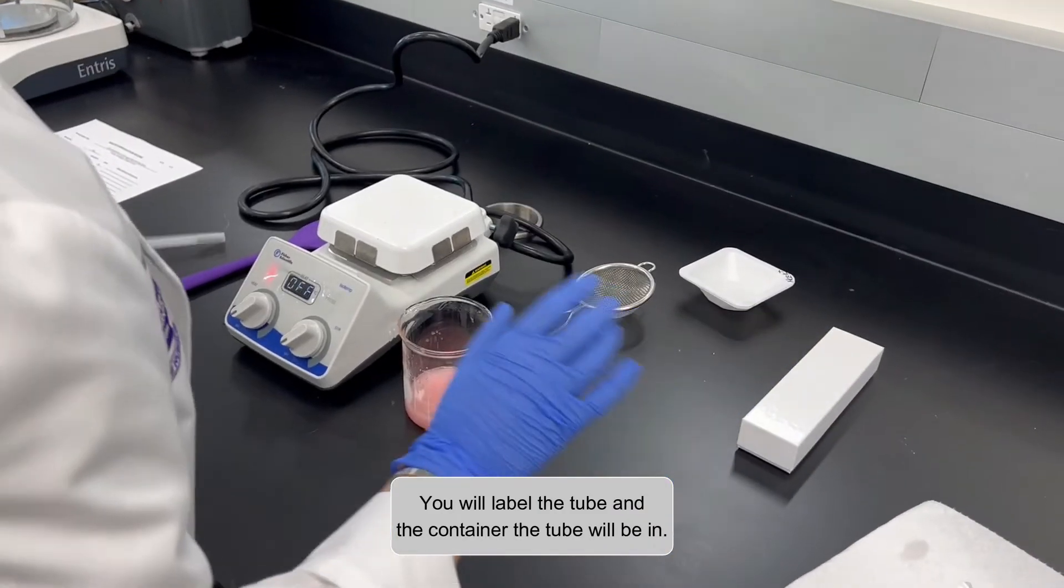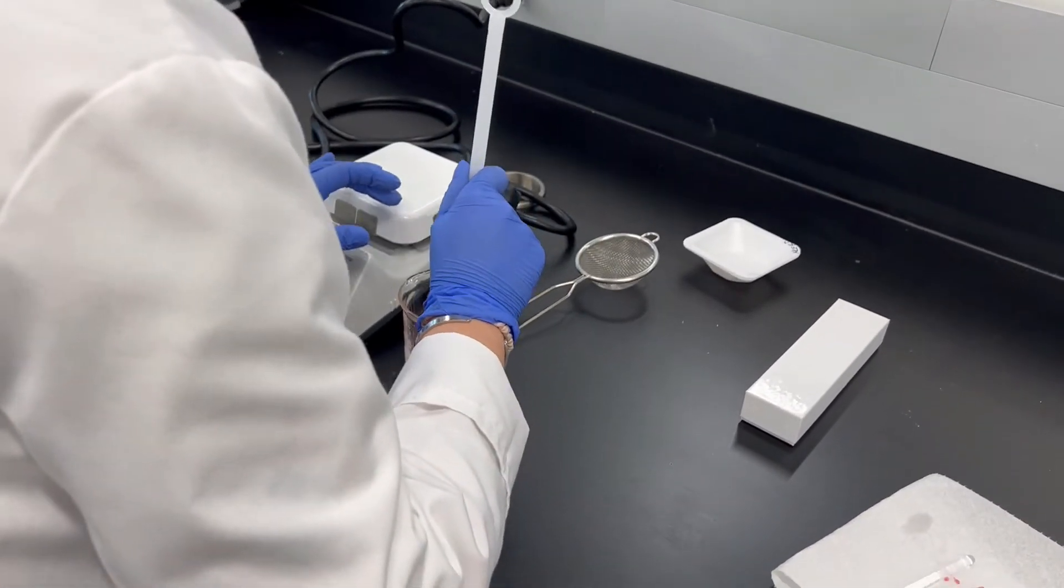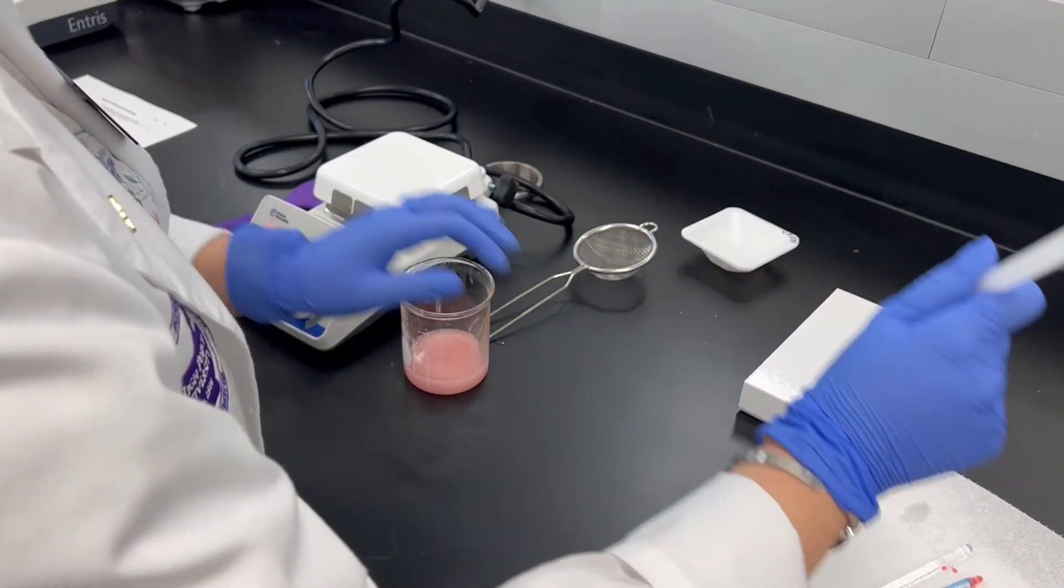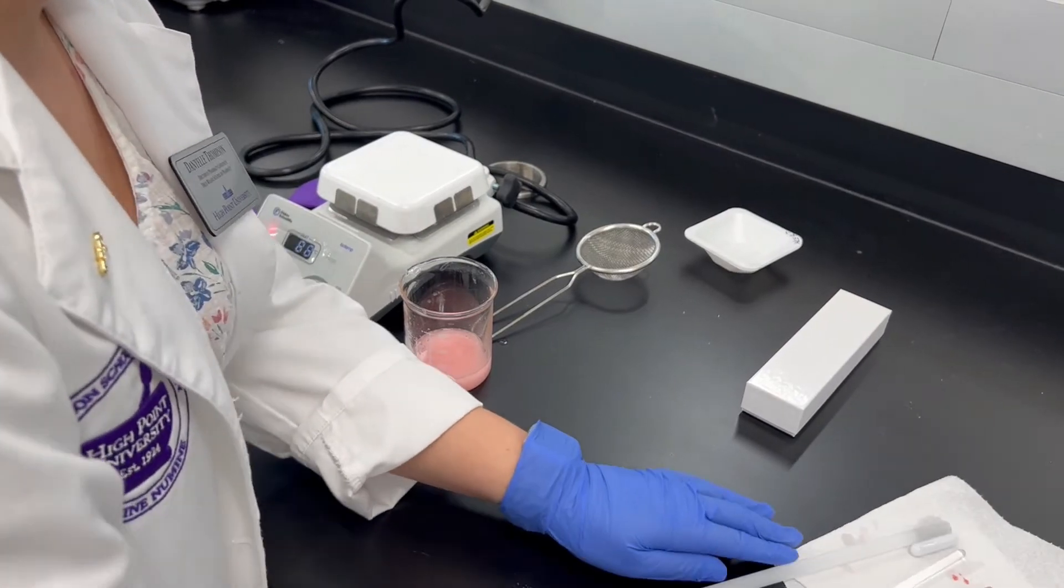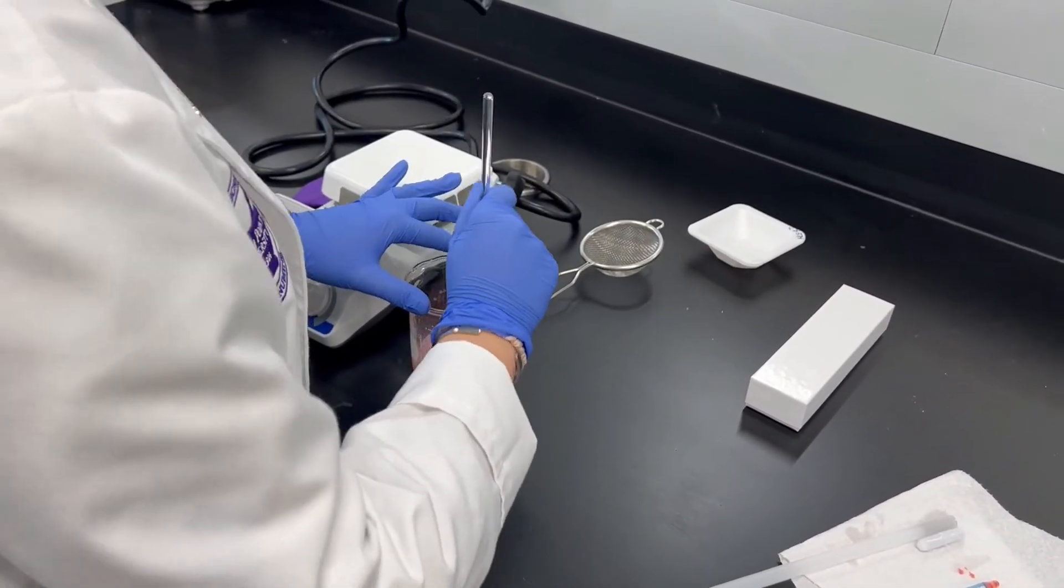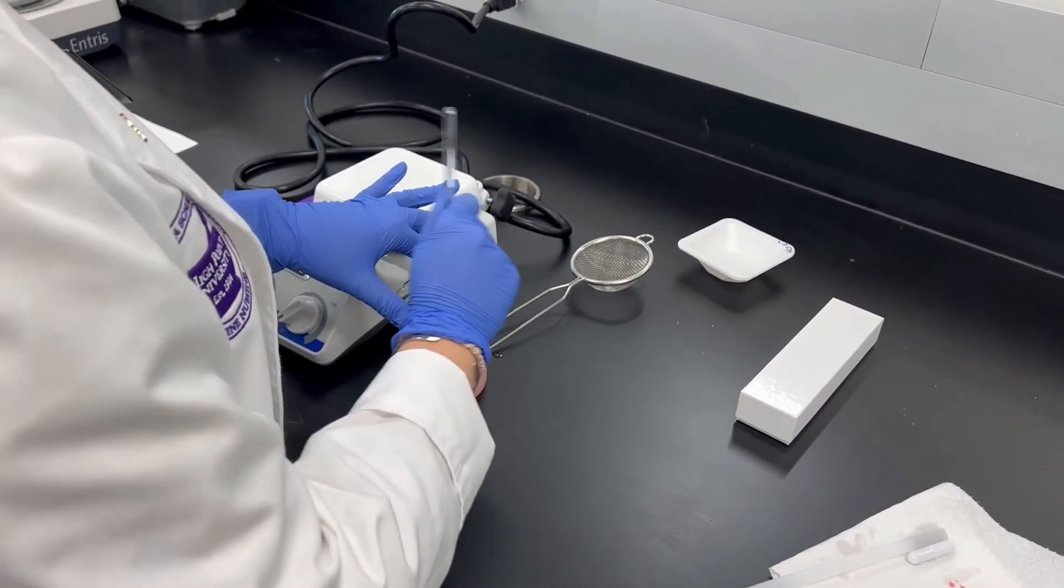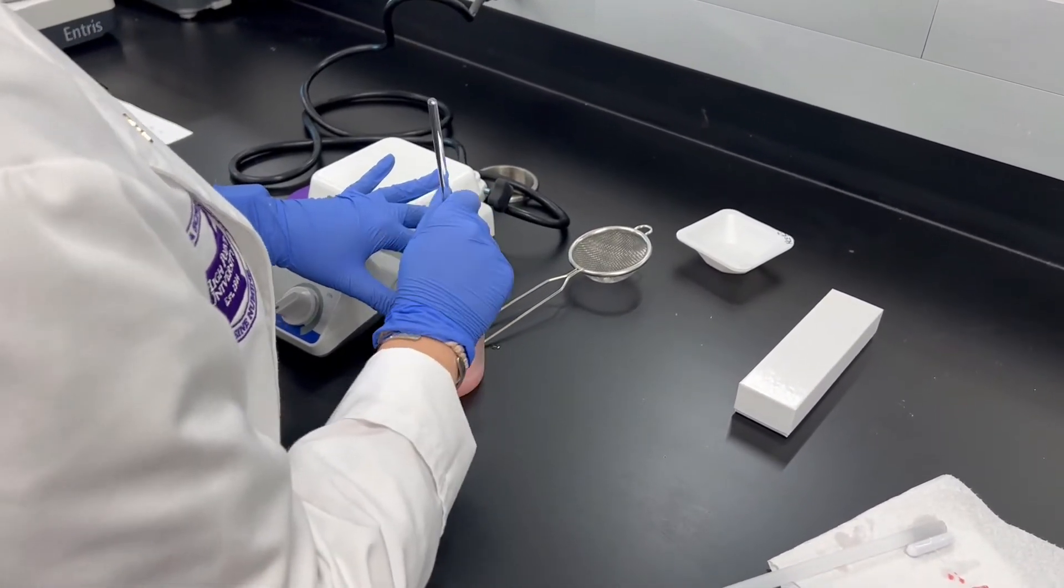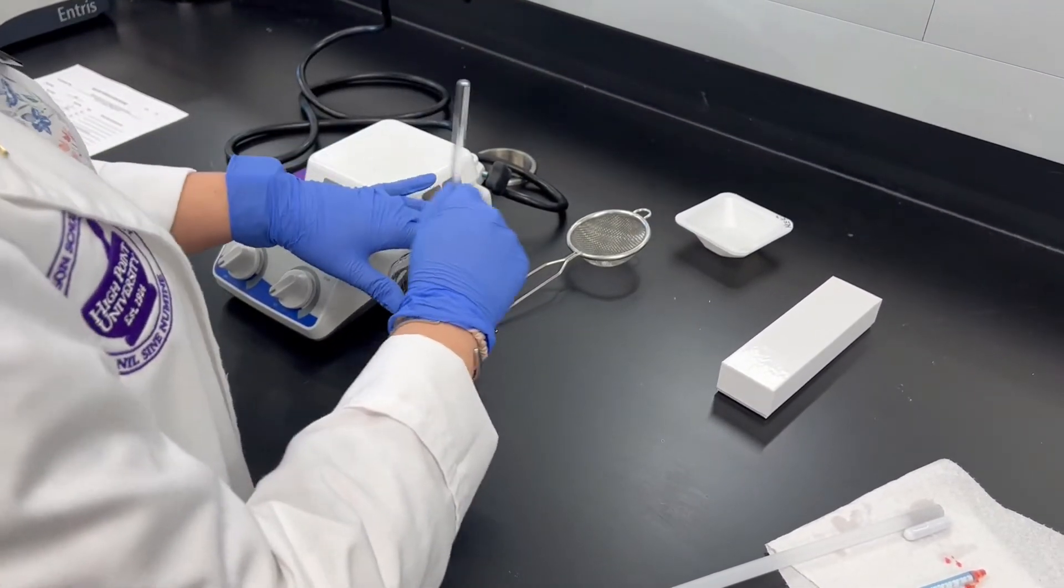Back to this. I'm going to go ahead and take this stir bar out and set it to the side. I'm actually going to take my glass stir rod and then just manually stir it until it starts to thicken a little bit. Once it starts to thicken, then we can go ahead and put it in our tube.